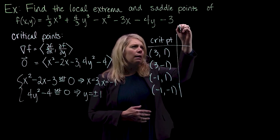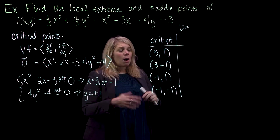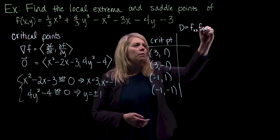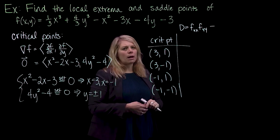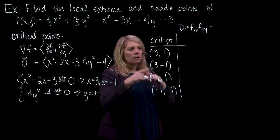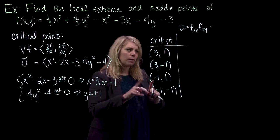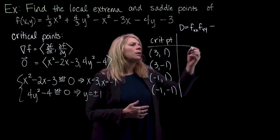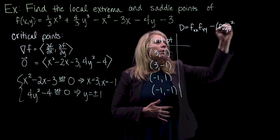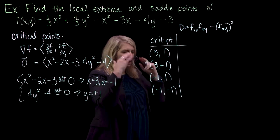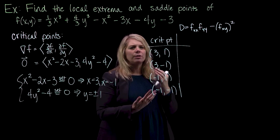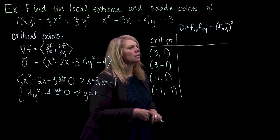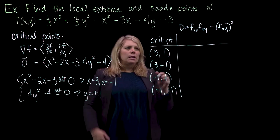We need to consider concavity in all directions, which is what the D function represents. The formula is the product of the second pure partials — fxx times fyy — minus the product of the mixed second partial derivatives. For functions where Clairaut's theorem applies, the mixed partials are equal, so we often write that as fxy squared. Product of the pure second partials minus the product of the mixed second partials.